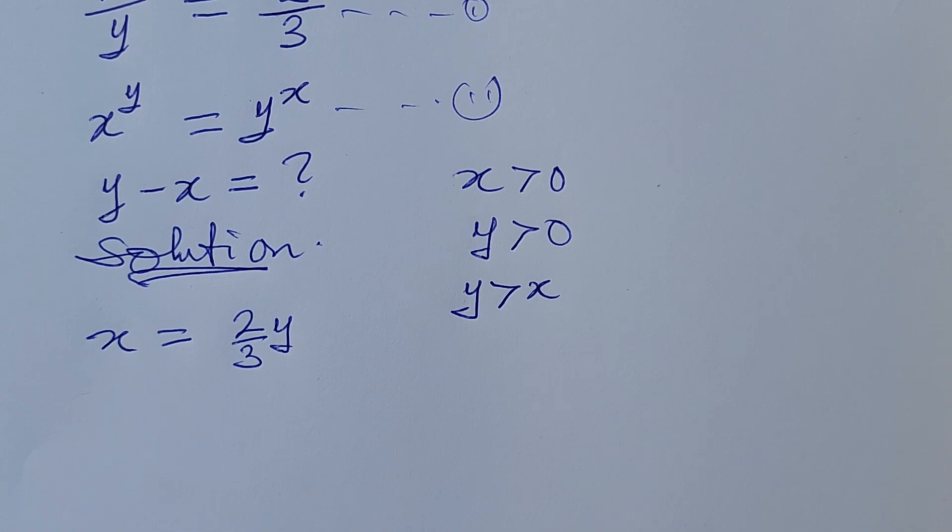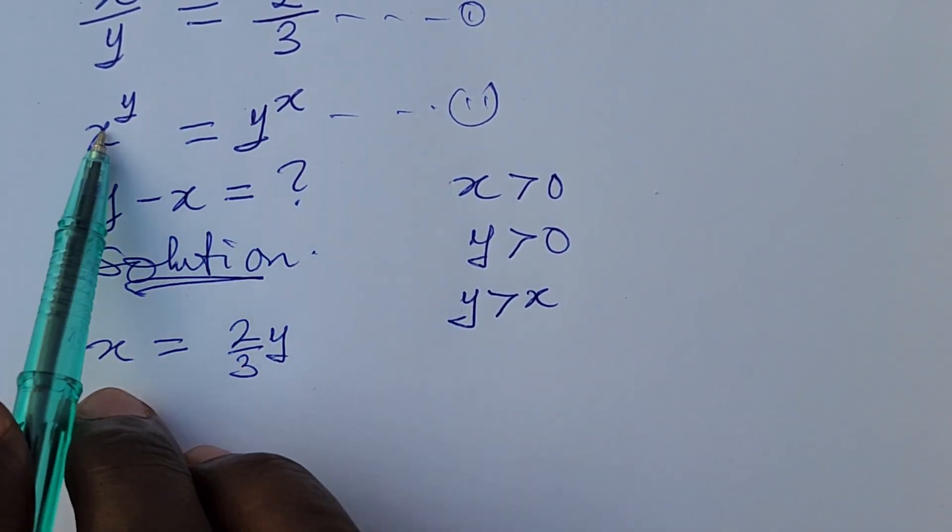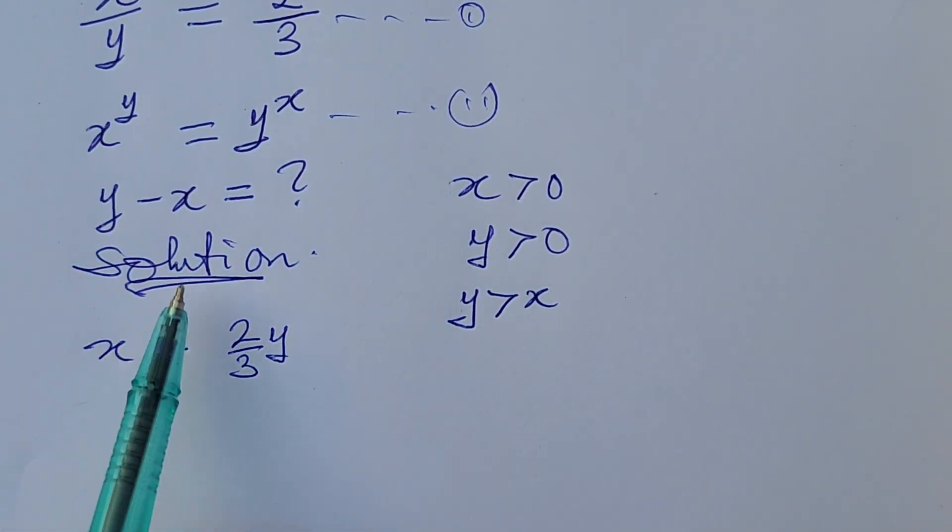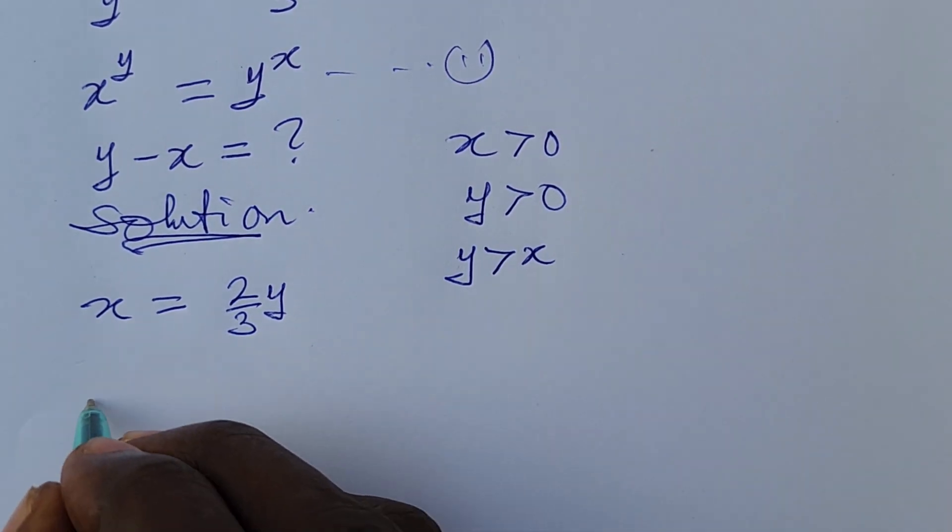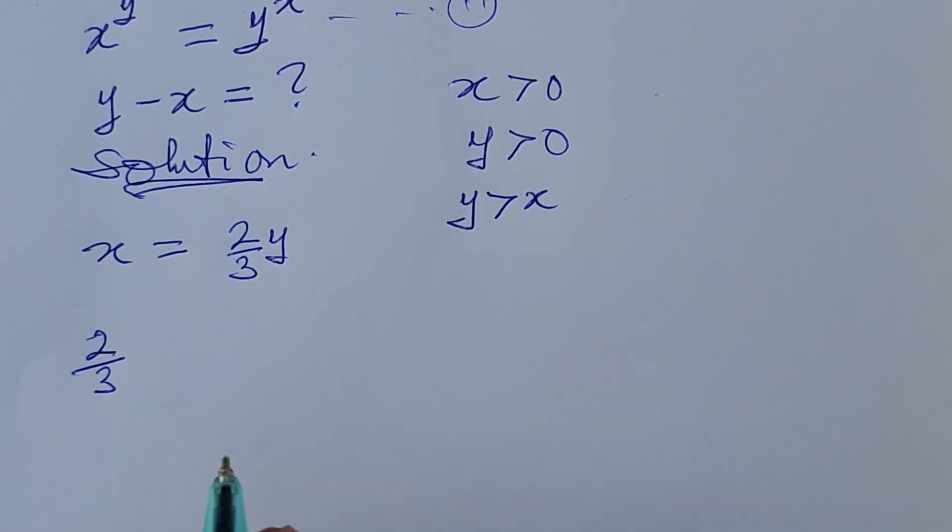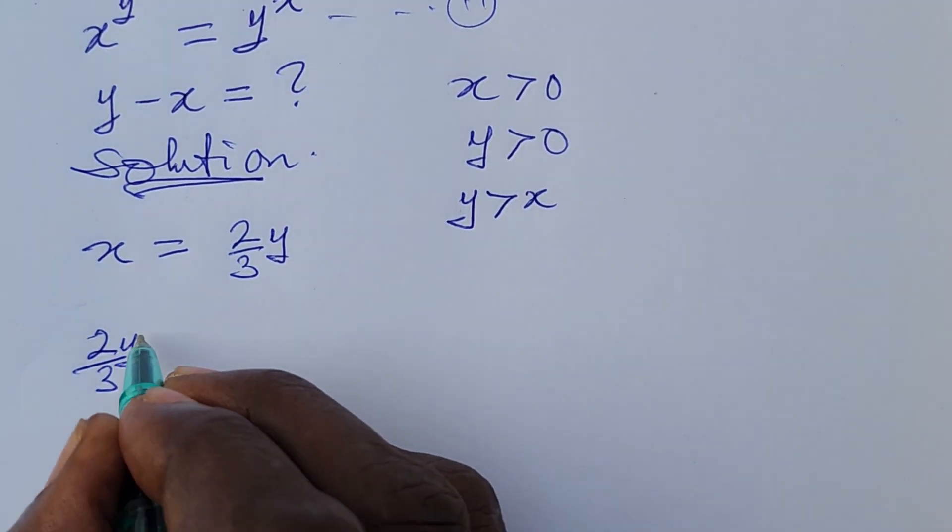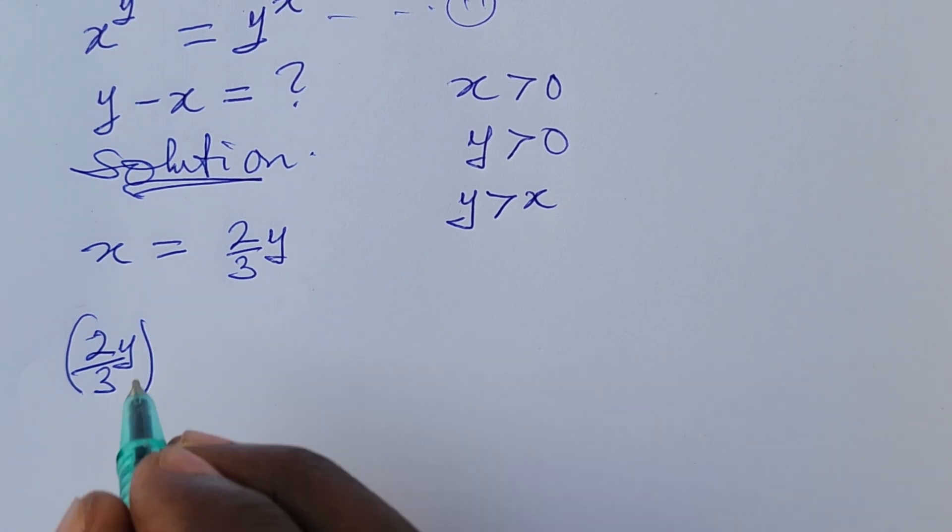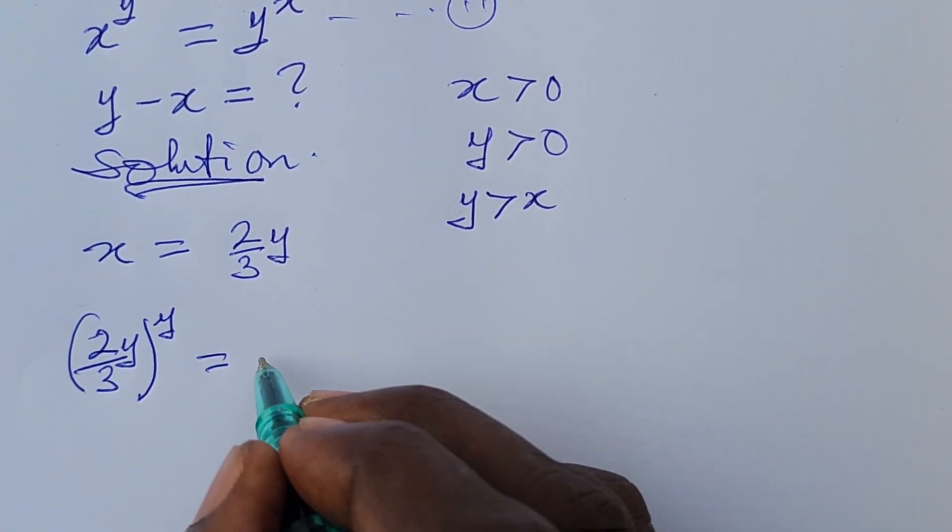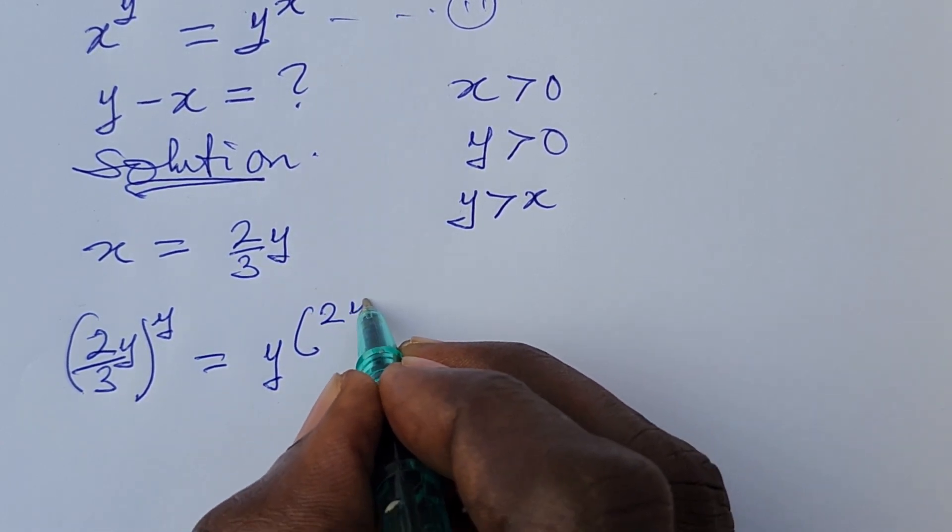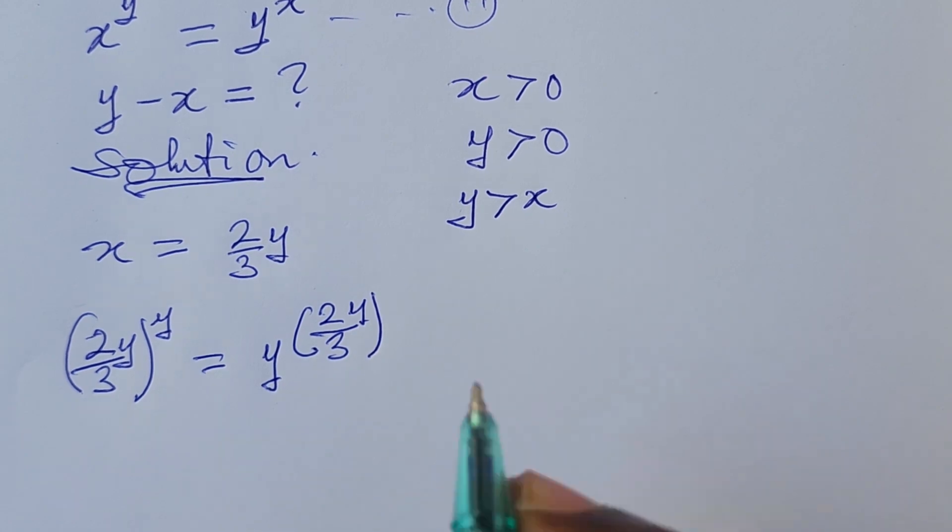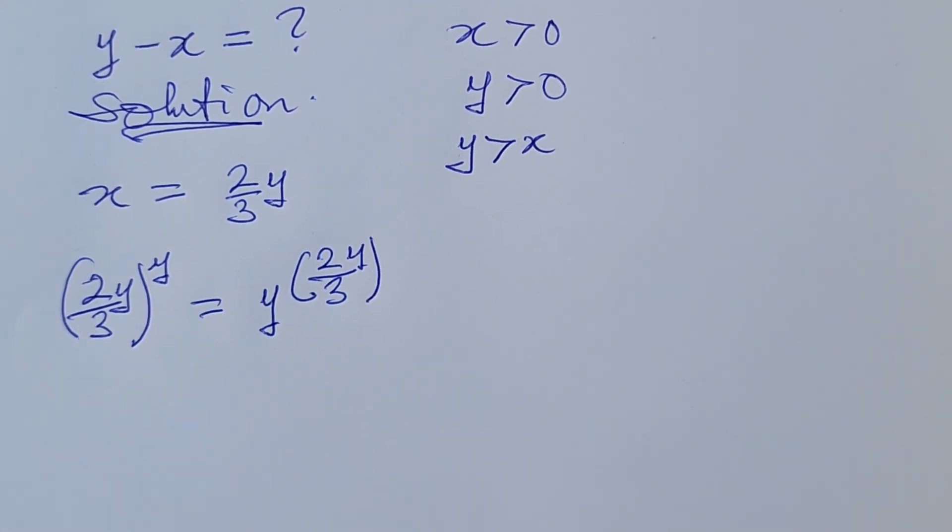Now if you look at equation 2, let's go ahead and substitute this value of x from here into equation 2. So doing that, this will give us 2 over 3 times y all to the power of y equals y to the power of 2y over 3.